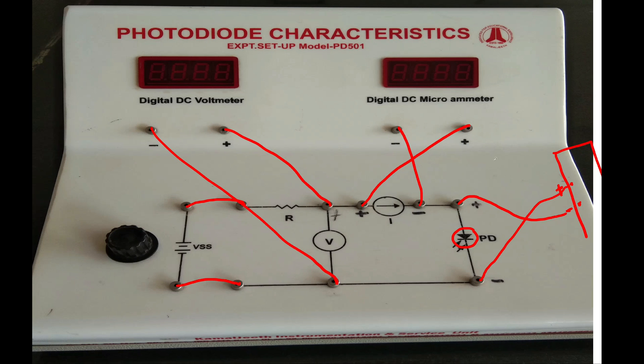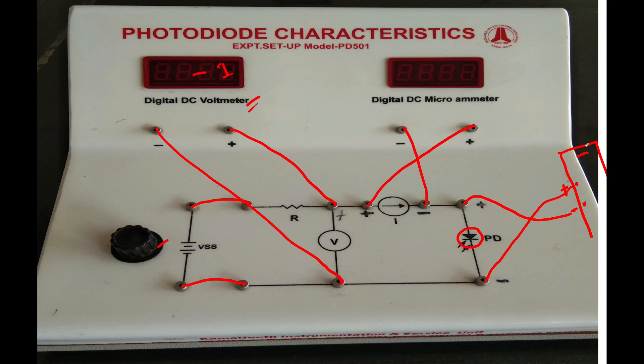Once you're done with the connection, initially you need to set the input voltage to minus 1 by using this knob. Once you set it, on one side there is an LED light and on another side there is a diode. There is one more knob. By using this knob, you need to control the...